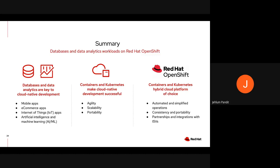Red Hat OpenShift is the container and Kubernetes platform of choice for databases and data analytics workloads. It automates and simplifies operations by providing a broad spectrum of databases and data analytics operators to be automatically deployed and lifecycle managed, empowering system administrators to focus on more strategic tasks. It gives consistency and portability across hybrid cloud, offering flexibility across public cloud, private cloud, on-prem, and Edge, with consistency throughout your app development lifecycle, be it development, test, or deployment. Red Hat also has partnerships and integrations with key database and data analytics ISVs to help make mutual customers successful.